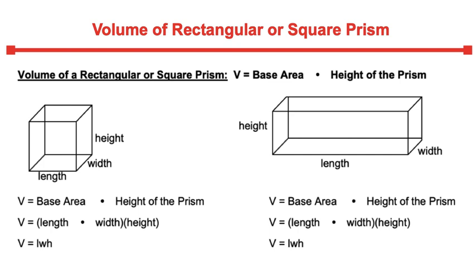In this video tutorial we will be discussing the volume of a rectangular or a square prism. So here we have two diagrams of rectangular or square prisms and the formula to find the volume is the base area times the height of your prism.